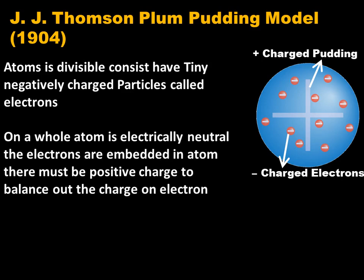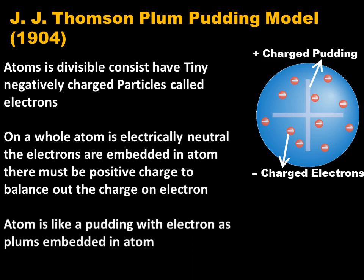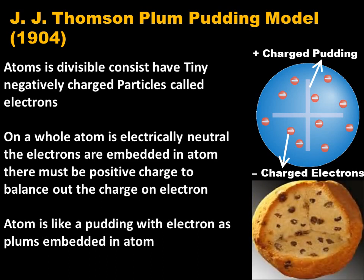J.J. Thomson knew that on the whole, the atom is electrically neutral and electrons are embedded in the atom. So in order to balance out these negatively charged electrons, there must be a positive charge. He said that the atom is like a pudding with electrons as plums embedded within it. This model is similar to the plum pudding, which is a famous English dessert.